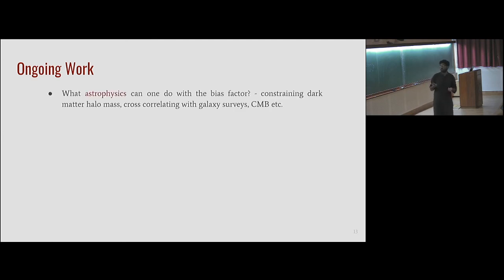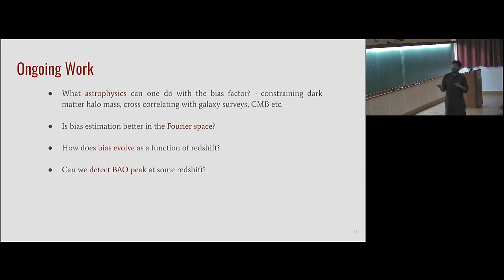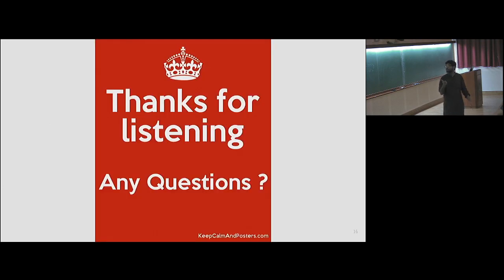The point of my work is that you can treat the binary black holes as an effective survey of binary black holes, and then you can use this survey to measure some large-scale structure properties. There's some ongoing work. What astrophysics can we do with the bias factor? Is bias factor estimation better in the Fourier space, in the power spectrum space, because the different k modes are disentangled? How does the bias factor evolve as a function of redshift? Can we detect the BAO peak at some redshift? This would be really important because then we can probe more deeper cosmological facts. Also, can we get some information about how these binary black holes form? Thank you.